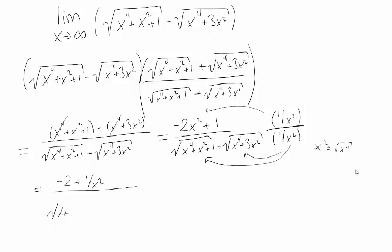x to the fourth divided by x to the fourth is 1. x squared divided by x to the fourth is 1 over x squared, and 1 divided by x to the fourth is 1 over x to the fourth. x to the fourth divided by x to the fourth is 1, and 3x squared divided by x to the fourth is 3 over x squared.